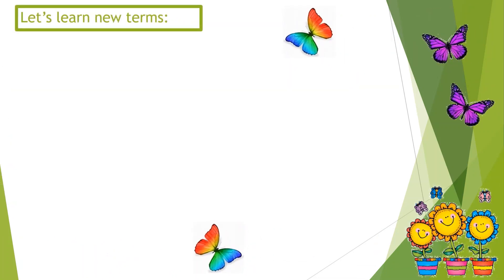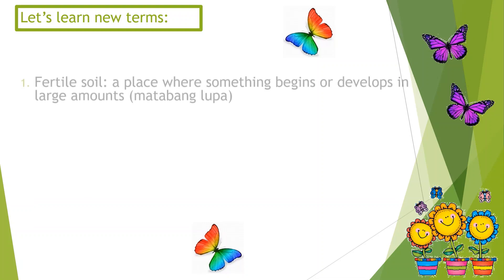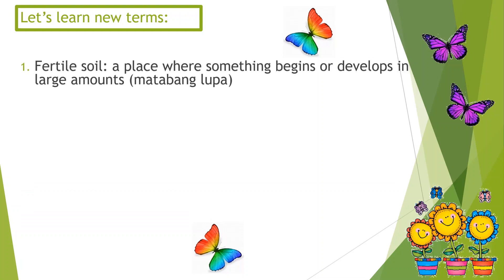Let's learn new terms. Number 1: Fertile Soil — a place where something begins or develops in large amounts. In Filipino, Fertile Soil is called Matabang Lupa.